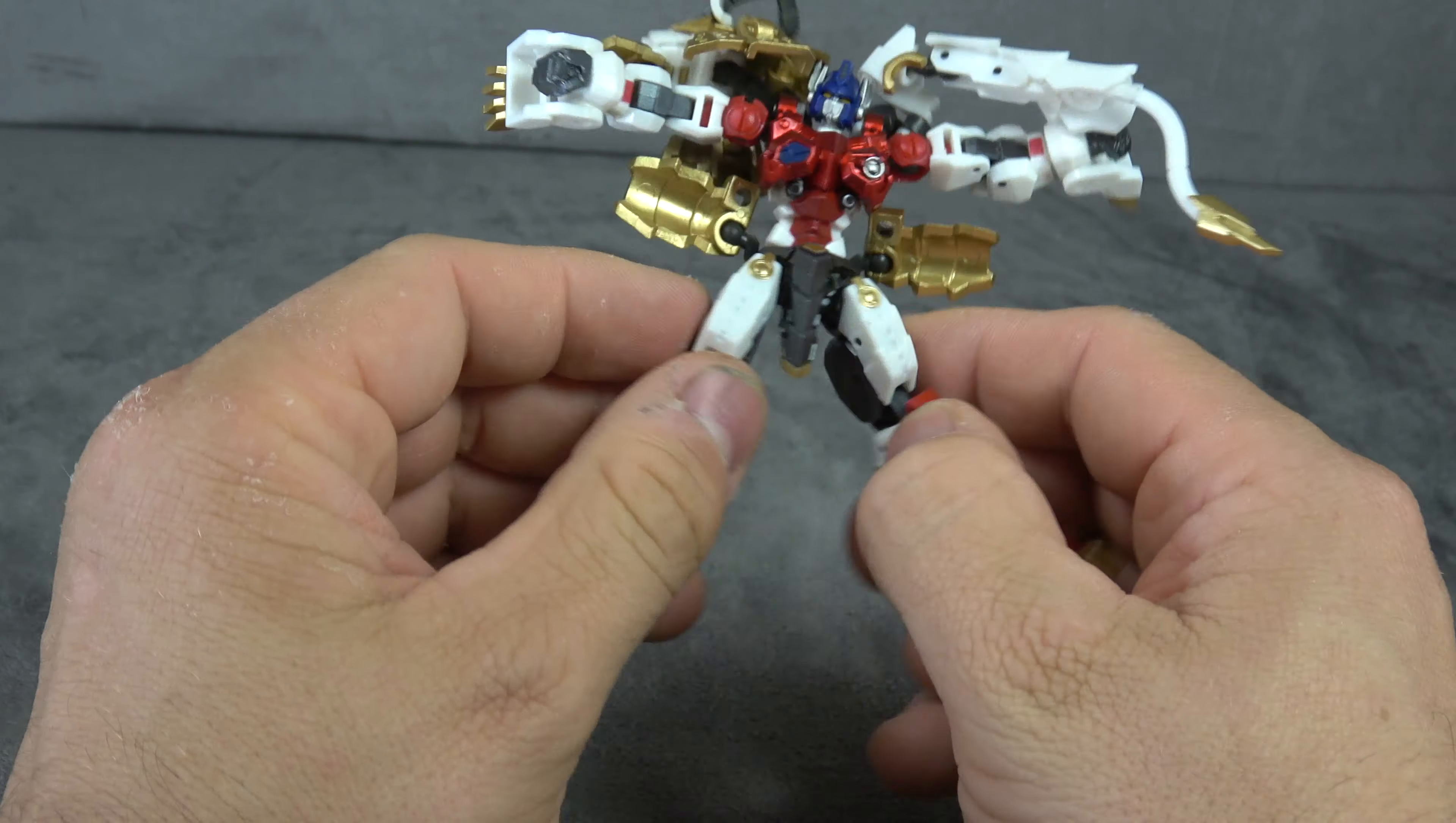There it is from the back. Size comparison wise, there it is with the Hasbro Legends and the old Iron Factory scale, as well as the Iron Factory Tarm. Pretty much what you'd imagine it to be size wise.